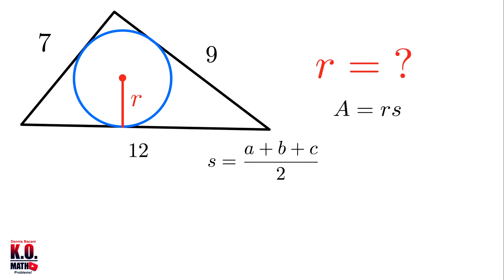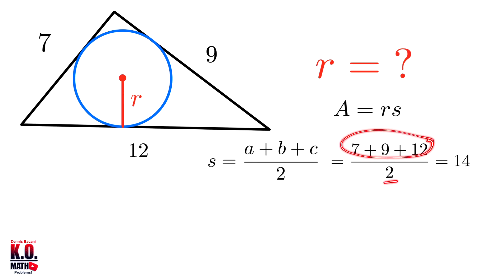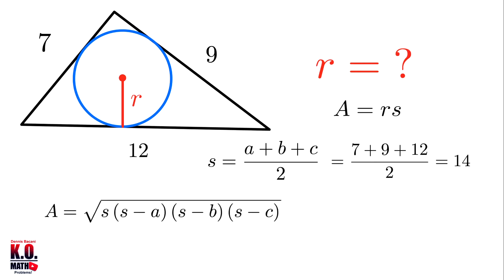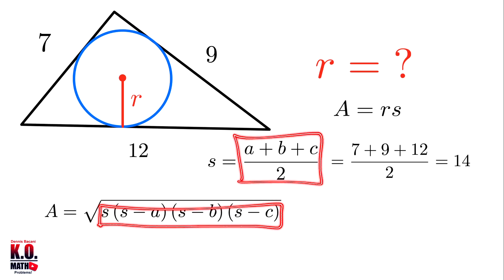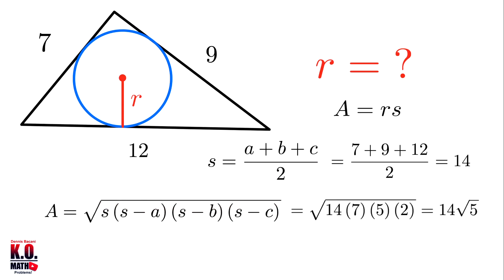The value of s is equal to 7 plus 9 plus 12 all over 2, which equals 28 divided by 2, giving us s equals 14. The famous formula for finding the area of a triangle with known sides is Heron's formula: area equals the square root of s(s−a)(s−b)(s−c). Substituting, we get the square root of 14 times (14−7) times (14−9) times (14−12), which is the square root of 14 times 7 times 5 times 2.